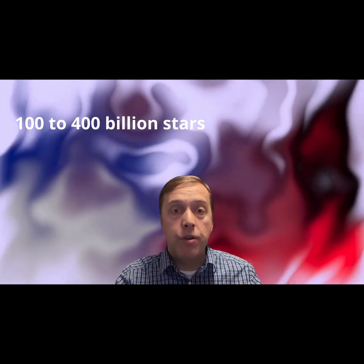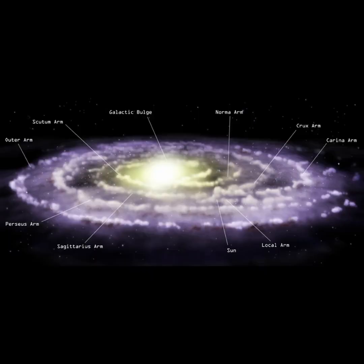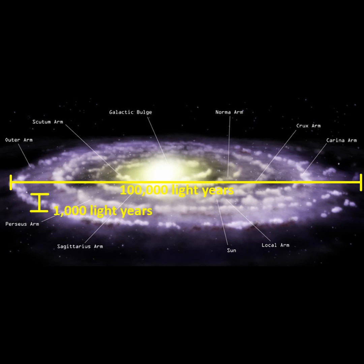The Milky Way is estimated to contain somewhere between 100 and 400 billion stars. The Milky Way is classified as a barred spiral galaxy. It has a span of 100,000 light years across its disk, and a thickness of roughly 1,000 light years.